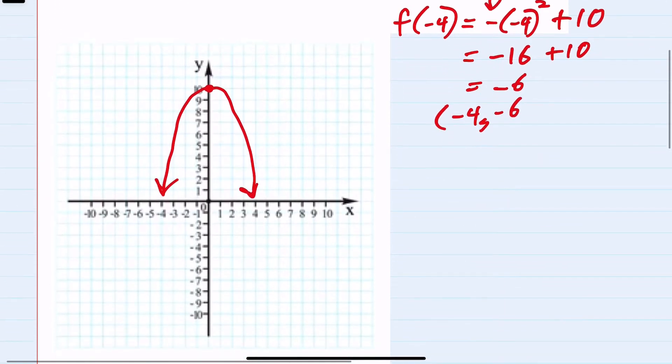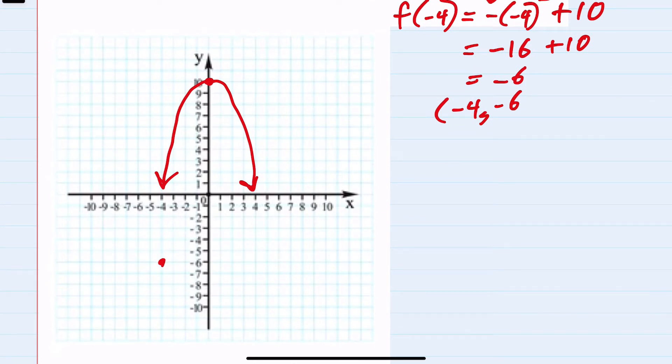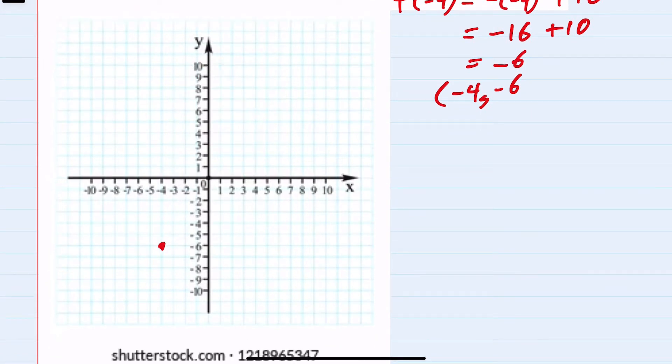On our graph, negative 4, negative 6 is here. So knowing that it has this shape...